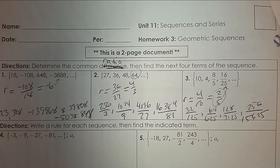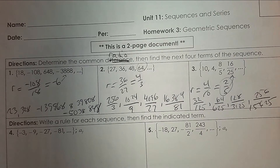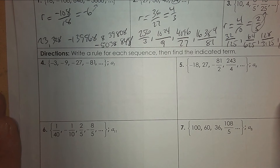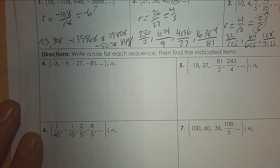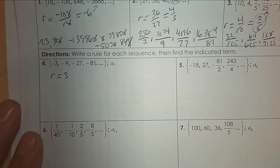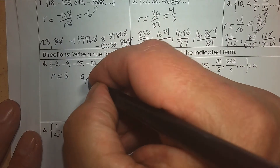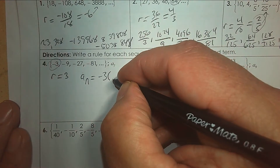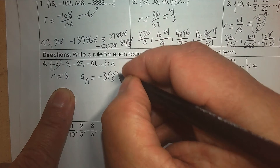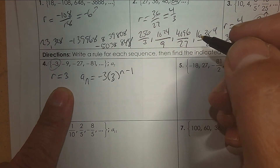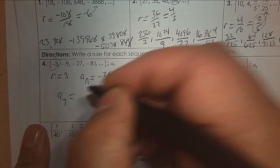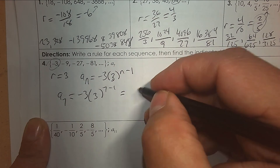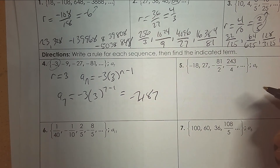Next: write a rule for each sequence. Here we have multiplying by 3 every time. The rule is: take the first term, negative 3, times R which is 3, to the exponent n minus 1. If I want to find the seventh term, plug in 7 and use your calculator to get your answer.